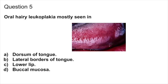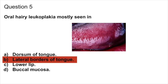Question 5. Oral hairy leukoplakia is mostly seen in: dorsum of the tongue, lateral border of the tongue, lower lip, or buccal mucosa? Answer: lateral border of the tongue. Oral hairy leukoplakia is seen in HIV patients, presenting as a vertically folded white patch most frequently on the lateral borders of the tongue. It is also called Greenspan lesion and is usually asymptomatic. Oral hairy leukoplakia, Burkitt's lymphoma, infectious mononucleosis, and nasopharyngeal carcinoma are manifestations of Epstein-Barr virus in HIV patients.